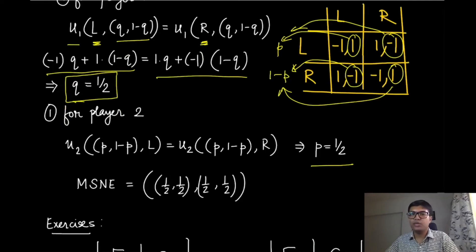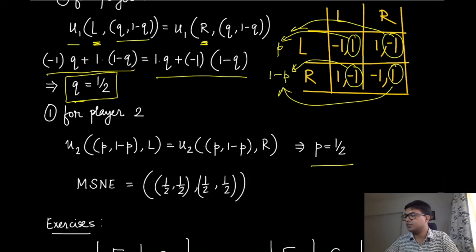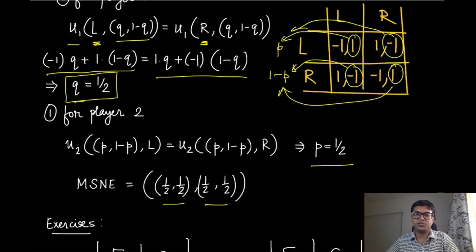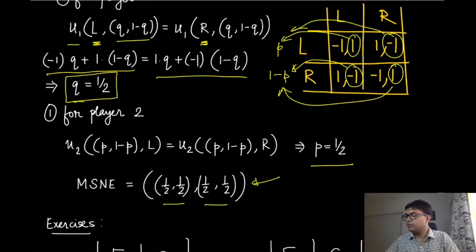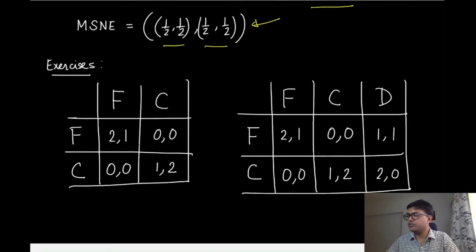So p = 1/2 and q = 1/2 — both players mix with equal probability. This is the unique probability profile that satisfies both the necessary and sufficient conditions of mixed strategy Nash equilibrium. Therefore, half-and-half for both players is the MSNE of the penalty shootout game, and that is how we found it — there was no magic.